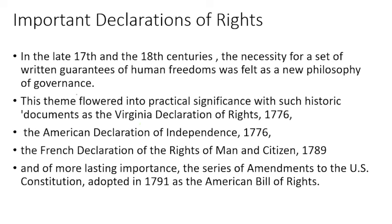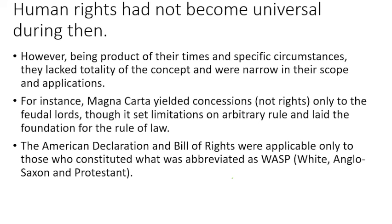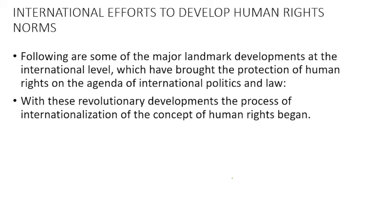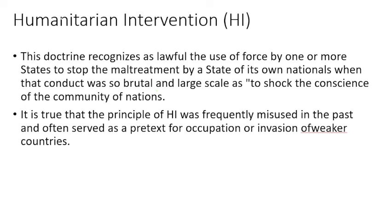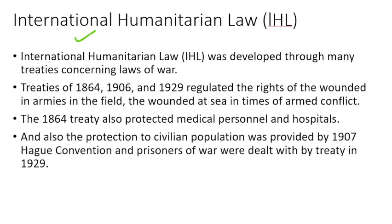Important declarations of rights — what was the written guarantee of human freedom? The Declaration of American and French rights, and the amendments to the U.S. Constitution adopted as the American Bill of Rights — this is also covered under human rights. Now we know that human rights are not universal yet. So what international efforts were brought to develop human rights? There are major landmarks for the development at the international level that made human rights a part of international politics and humanitarian intervention and international humanitarian law.